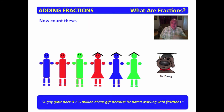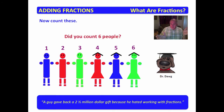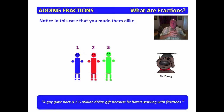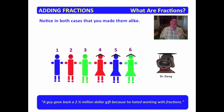Let's count these. One, two, three, four, five, six. We have six people. Did you count six people? I want you to notice that in this case, you made them alike. You looked at this and you said we have three guys. And in this case, you looked at them and you made them alike. You said we have six people.